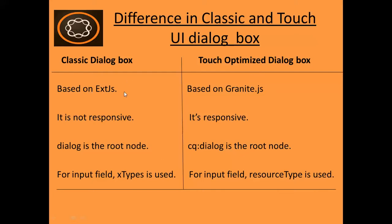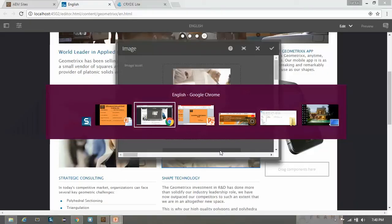Let's see the difference between these two dialog boxes. The classic dialog box is based on the ExtJS framework, which is a widget library, whereas the touch optimized dialog box uses Granite.js. The second difference is that the classic dialog box is not responsive, whereas the touch optimized dialog box is responsive and supports mobile and tablet well. In the classic dialog box, 'dialog' is the root node, and in the touch optimized dialog box, 'cq:dialog' is the root node.